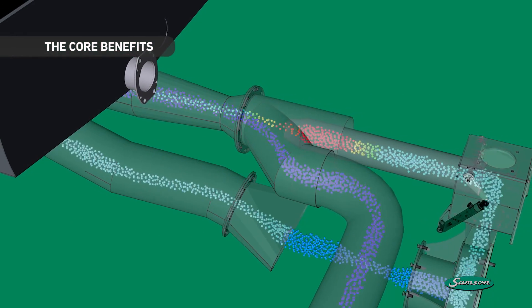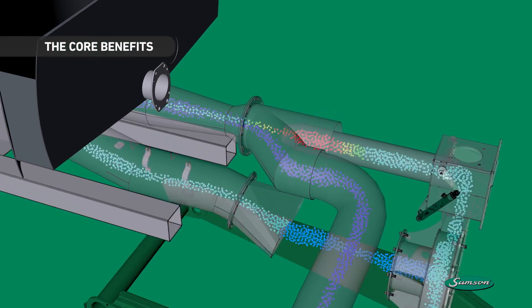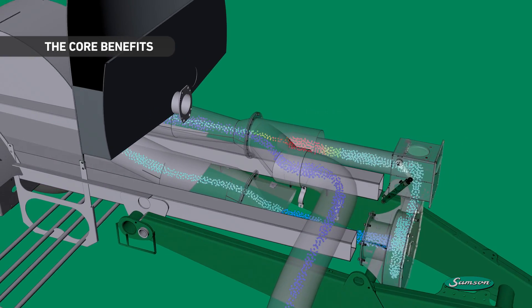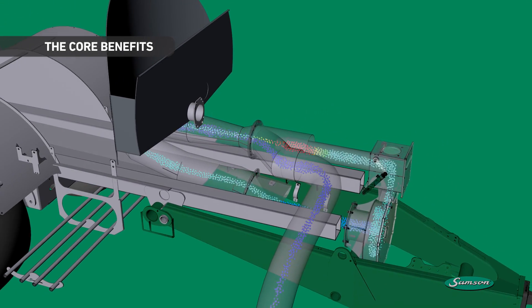The Samson Agro Ejector Vacuum System is intelligently implemented and deeply integrated into Samson Agro products and can be utilized in a variety of ways.